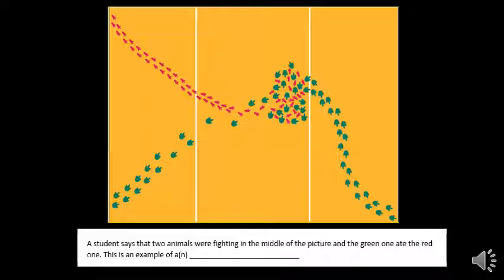A student says that two animals were fighting in the middle of this picture and the green one ate the red one. This is an example of observations and inferences.